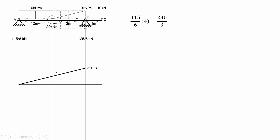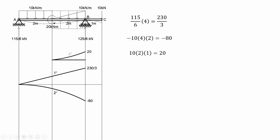So the moment diagram by part of the uniform load would be drawn. For the countering uniform load, the moment diagram by part would also be drawn. Now for the couple, it will cause the beam to deflect downward, so it will give you a negative moment.